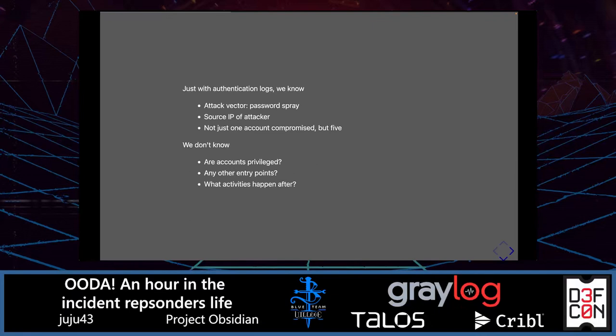It's important here to not jump the gun — if you had acted directly based on the user report alone, you would have only contained or disabled one user, which would not have blocked the attacker because there were five accounts compromised. A few things we still don't know: are those accounts privileged? Are there any other entry points? And what activity happened after that?